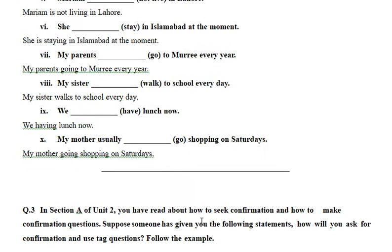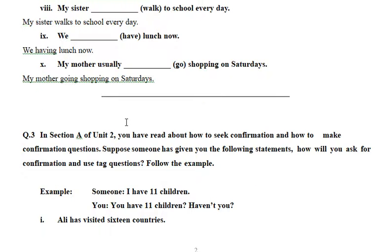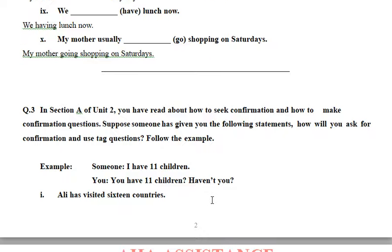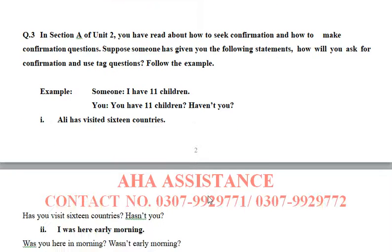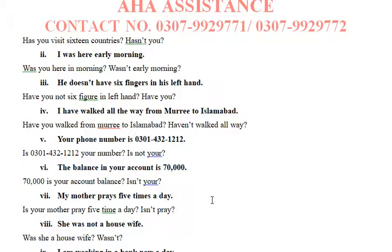With question number 3, you have learned about confirmation sentences from unit 2 — sentences expressing 'if you have' or 'if you have not.' In this way, you will convert all the statements into confirmation sentences.